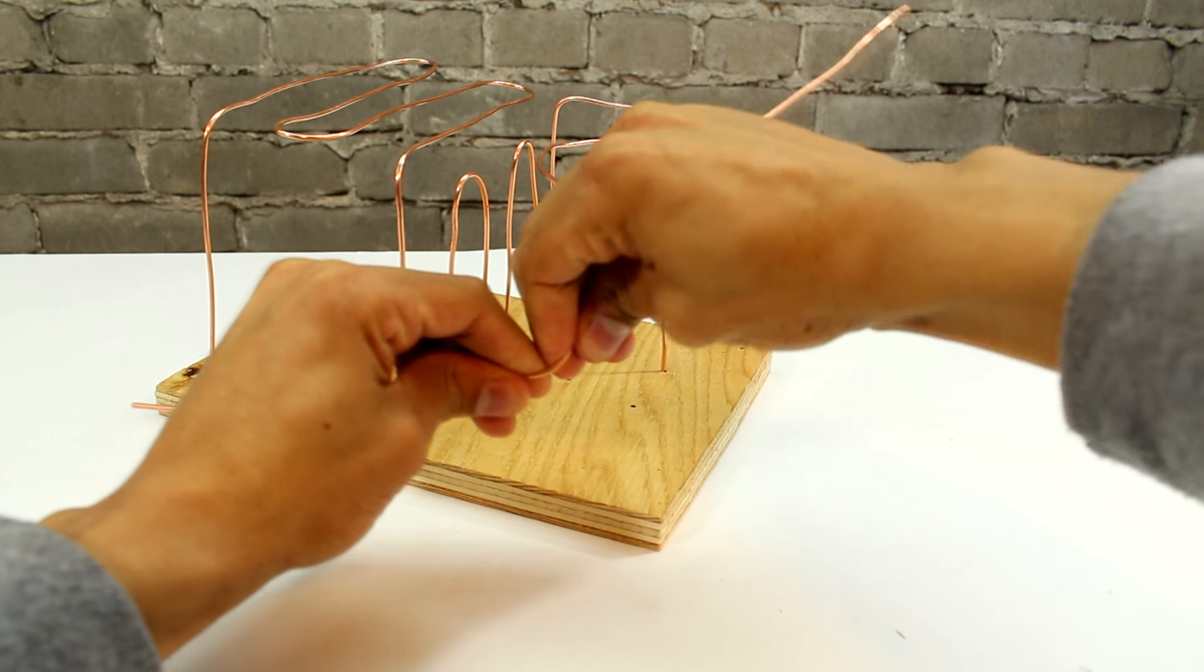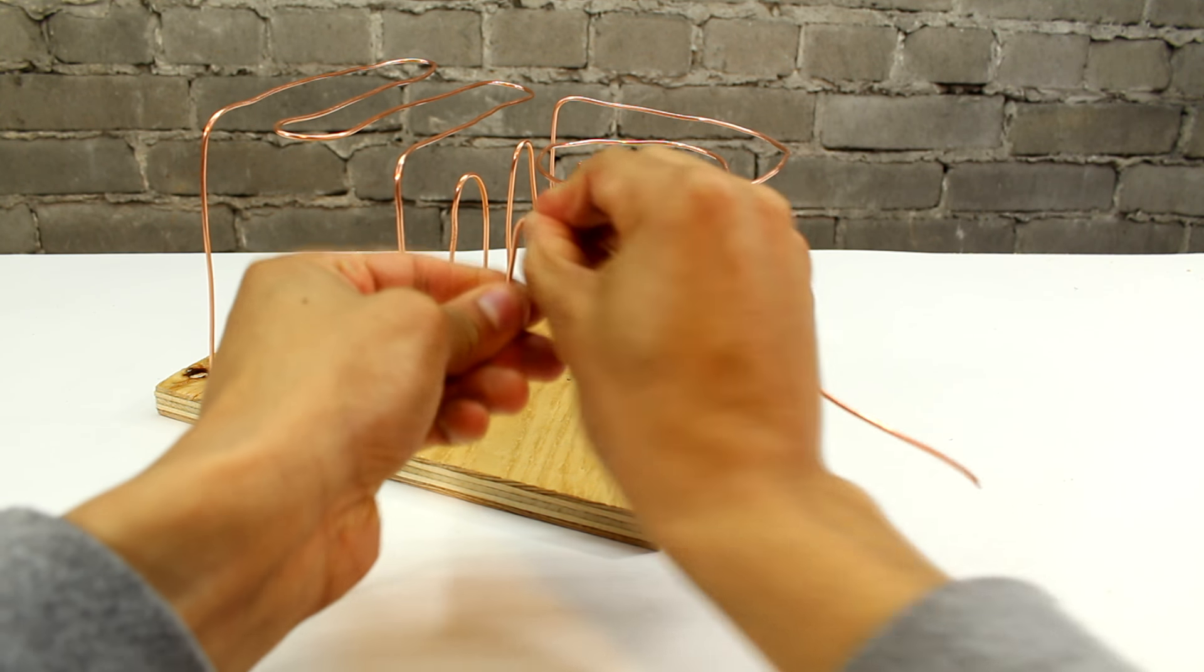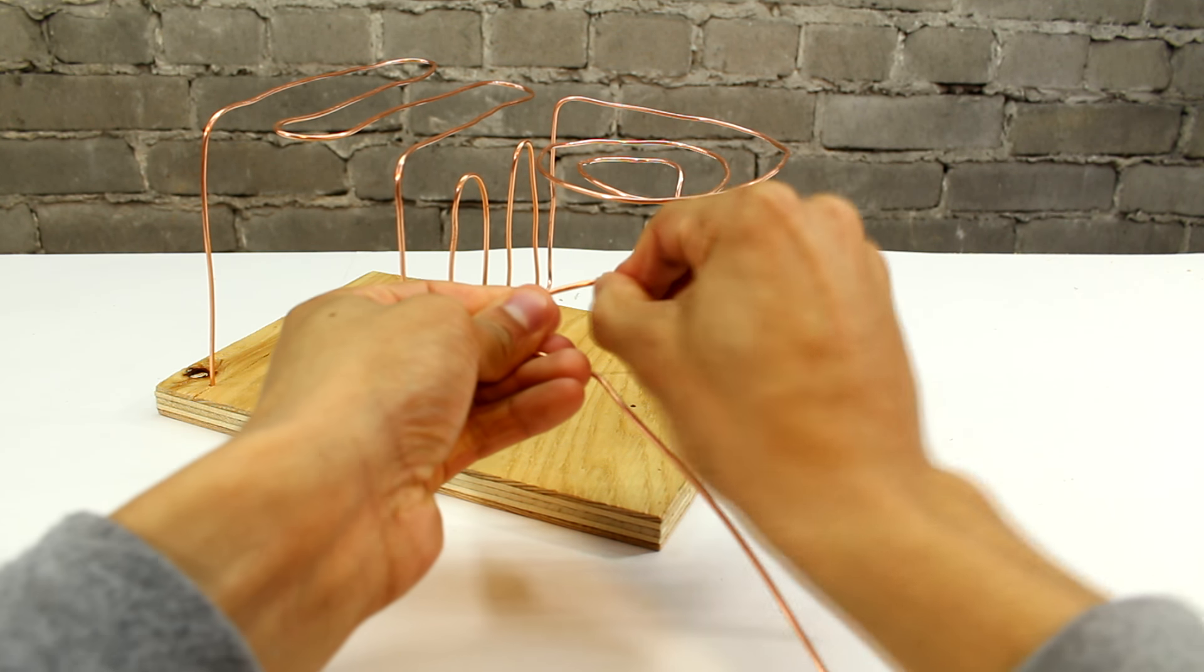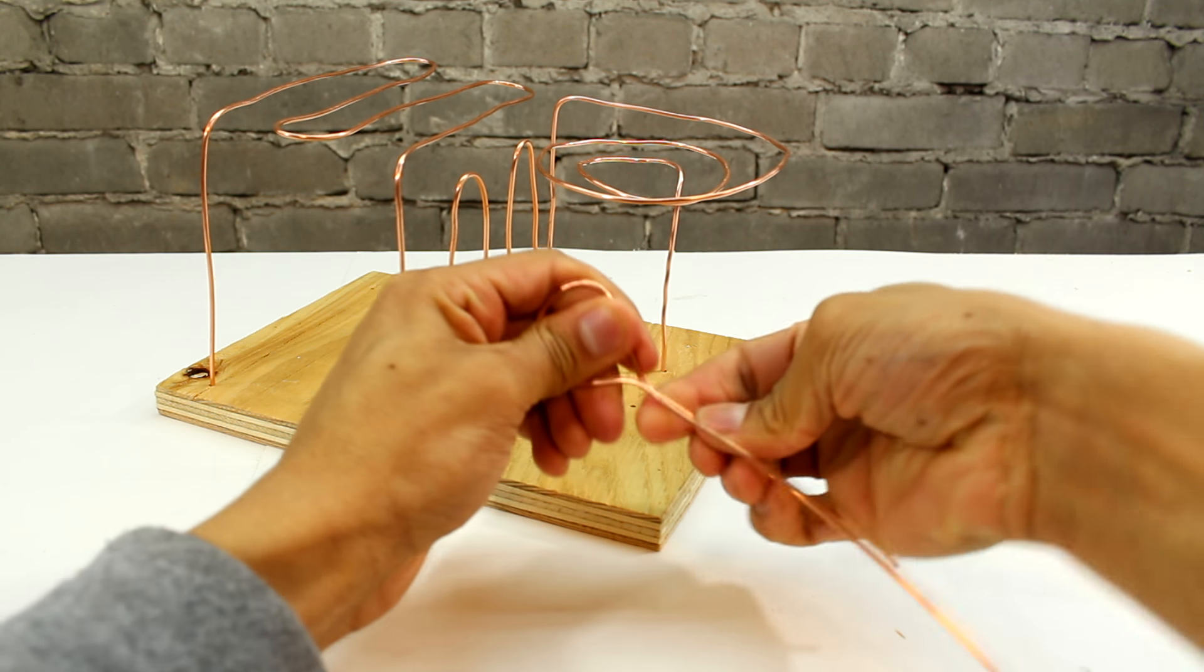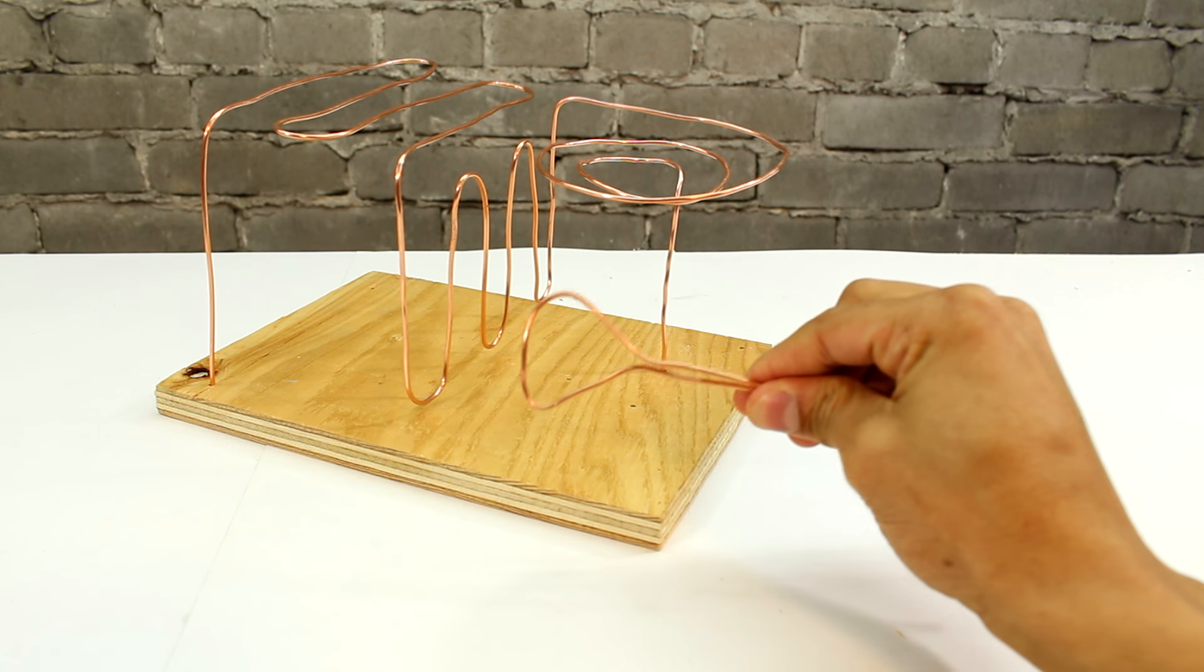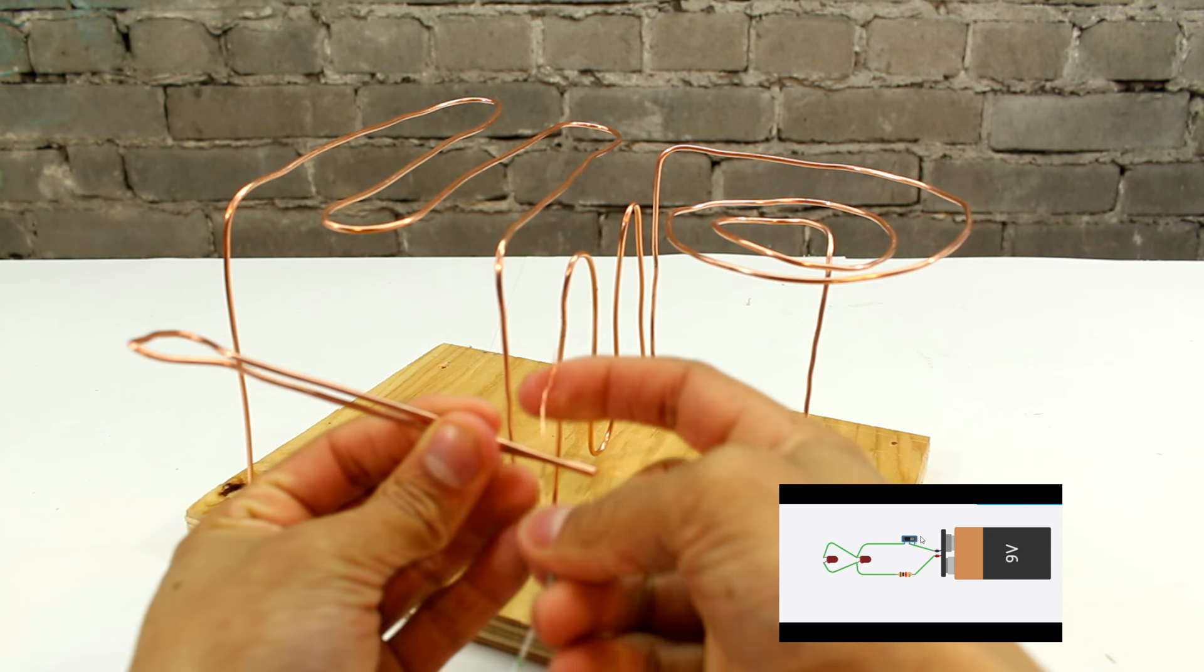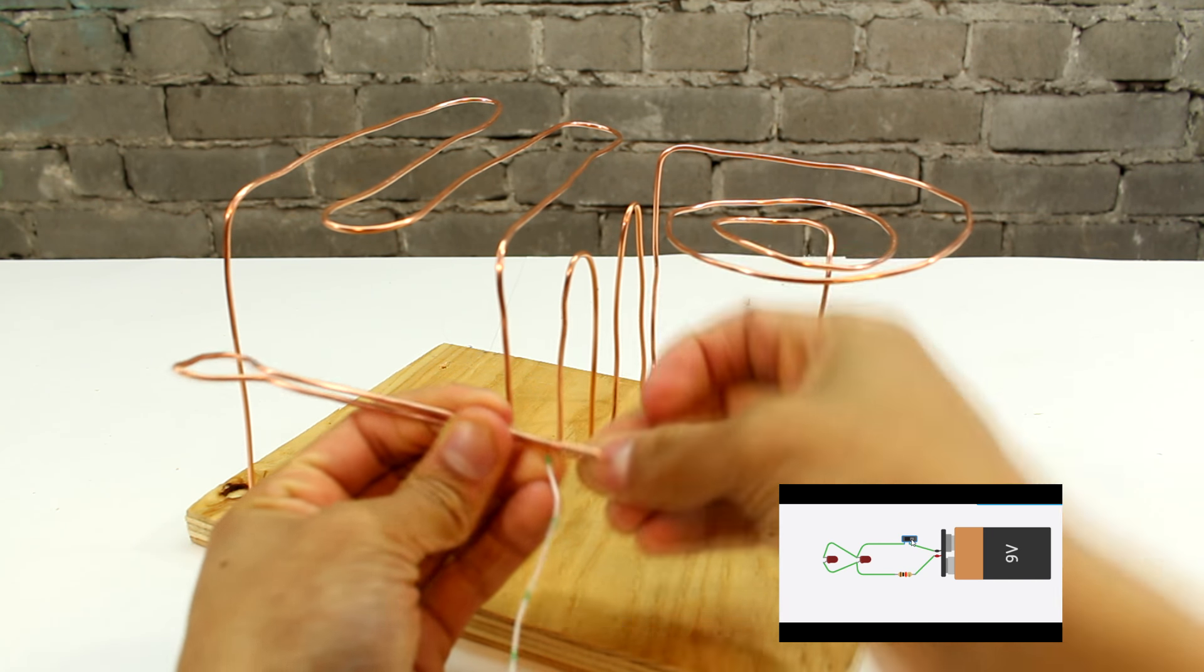Next, we're going to need the part that you're going to be holding in your hand. This part here is going to be copper wire as well. The part that we're working on right now is essentially going to act as a switch. When the copper wire in your hand touches the copper wire of the game board, it's going to complete a circuit which will cause the buzzer and lights to go off.